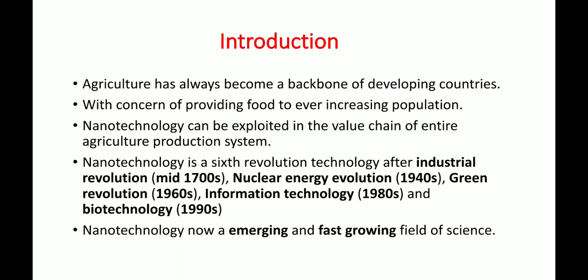Agriculture is the backbone of developing countries, providing food for an ever-growing population. Hence there is a need for nanotechnology to exploit the value chain of the entire agriculture system. Nanotechnology is considered the sixth revolution technology, after the industrial revolution in the mid-1700s, the nuclear revolution in the 1940s, the green revolution in the 1960s, information technology in the 1980s, and biotechnology in the 1990s. Nanotechnology is now an emerging and fast-growing field of science.